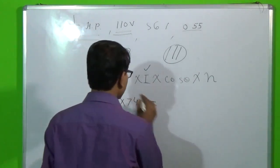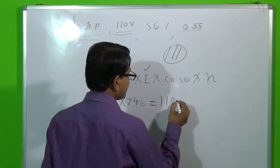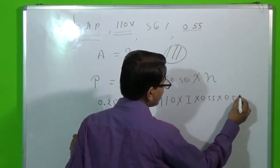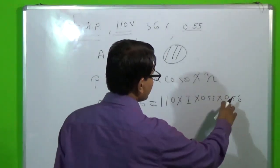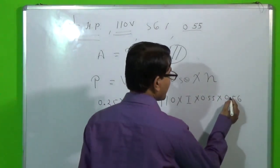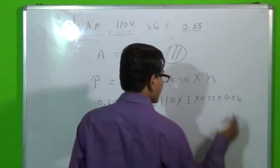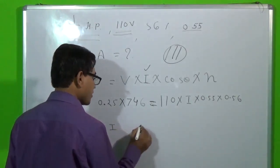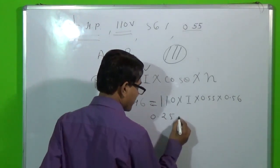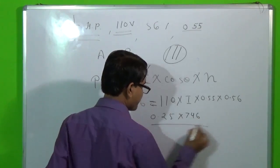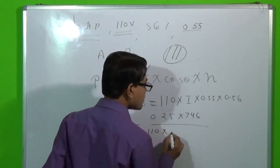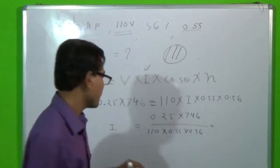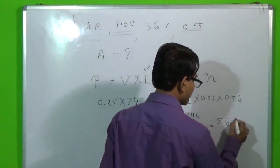V equals 110 volts, I is unknown, power factor is 0.55, and the machine is 56% efficient. Converting the percentage efficiency to a decimal, we divide by 100 to get 0.56. Solving for I, it becomes 0.25 × 746 divided by 110 × 0.55 × 0.56. Solving this equation, the current value comes out to 5.6 amperes.